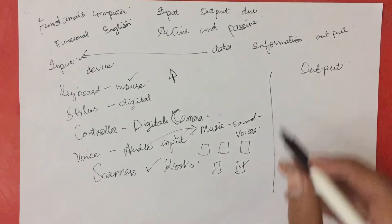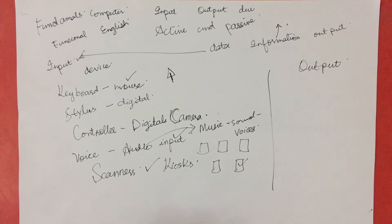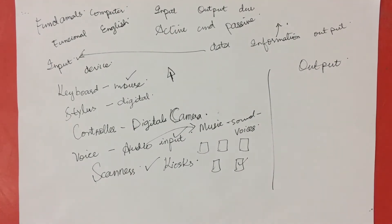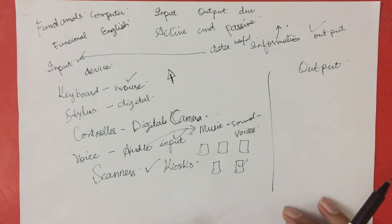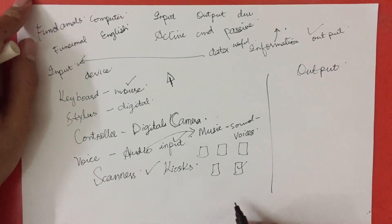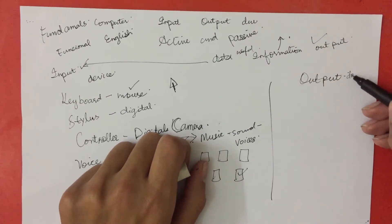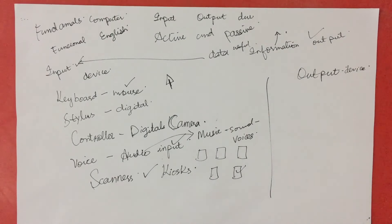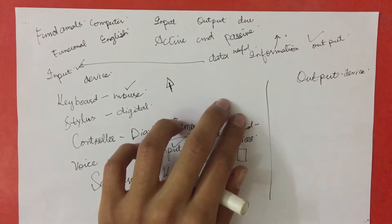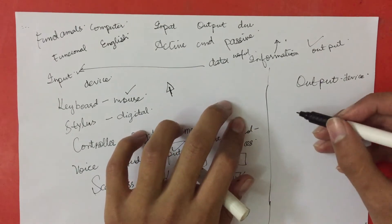Now let's come to output. Output, as stated earlier, is the useful information you get from the data processing your computer does. There has to be some way the computer provides you with an output, so let's also discuss what is an output device. An output device is any device through which a computer provides and displays the useful information to the user.